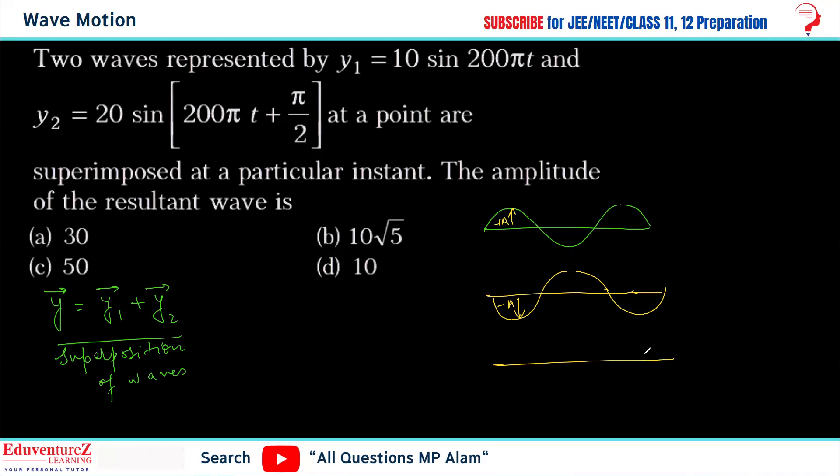This is called superposition of waves. When will they cancel? When both phases are opposite. If their phases are opposite, they will cancel. If the phases are not opposite, then we see what method is used.